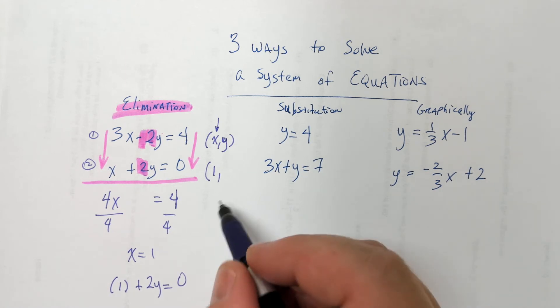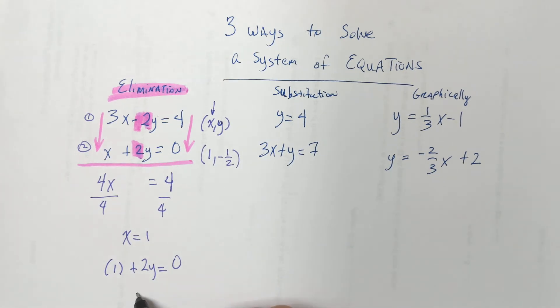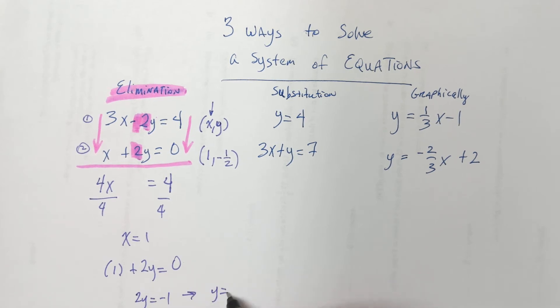So, 1 plus 2y equals 0. And you solve that, and you're going to get negative 1 half. Because you would subtract 1, right? And then divide by 2. You get 2y equals negative 1. And so then, y is equal to negative 1 half.